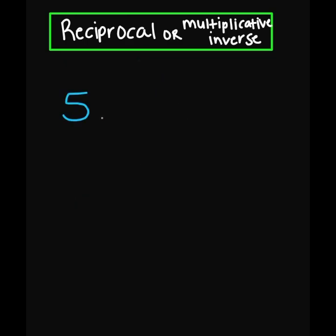What's the reciprocal of 5? The reciprocal of 5 is going to be 1 over 5. If I multiply my number times the reciprocal — so 5 times 1 over 5 — it has to equal 1.